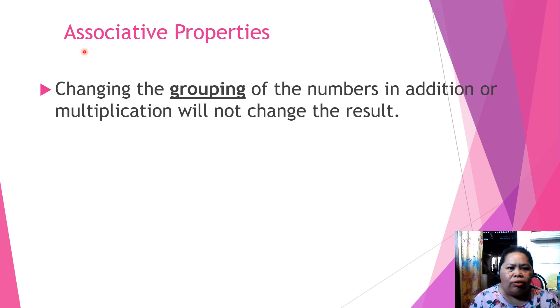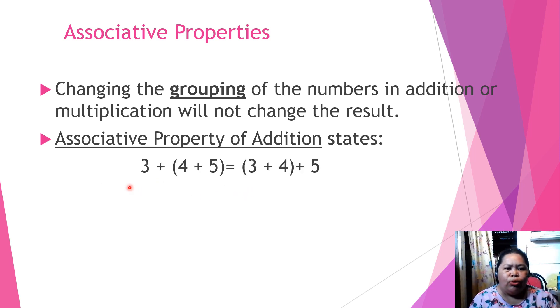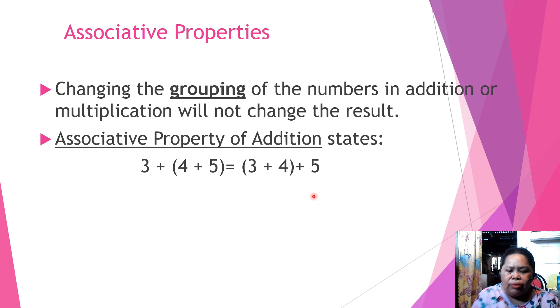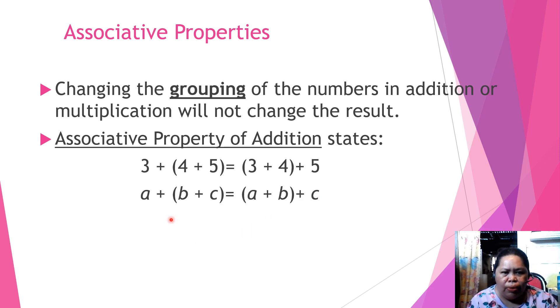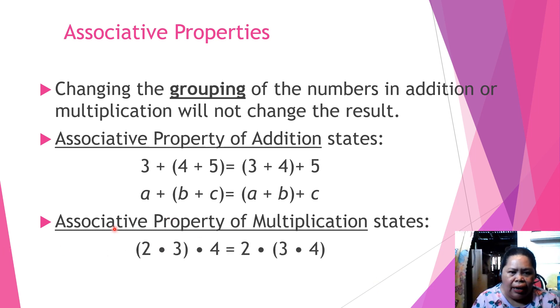Let's have associative properties. Changing the groupings of numbers in addition or multiplication will not change the result. The associative property of addition states that 3 plus 4 plus 5 is equal to 3 plus 4 plus 5. Even though we change the groupings, the answer is still the same. And also with multiplication, like 2 times 3 times 4, or we regroup them, same answer is given.